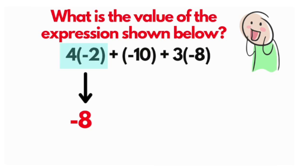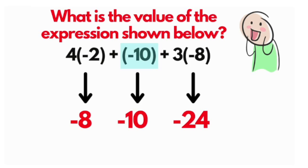And let's look for any other multiplication we have in this problem. It looks like we have three times the value of negative eight, which would be negative 24. And then we could just drop negative 10 down because it's just a number value.